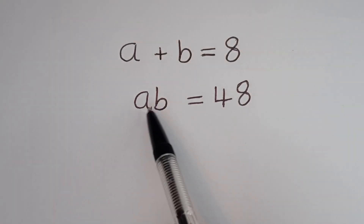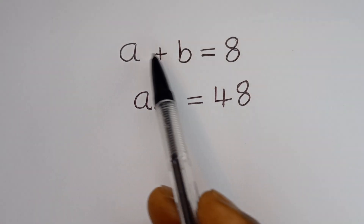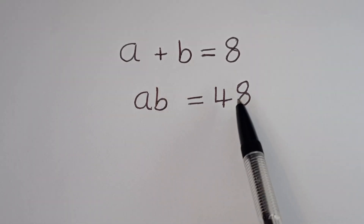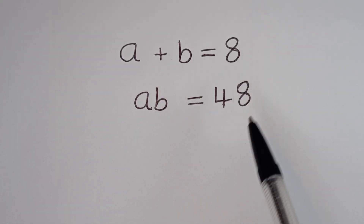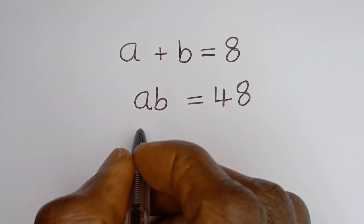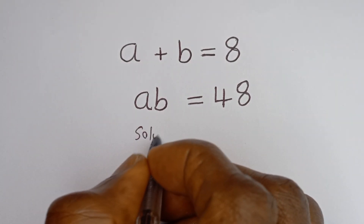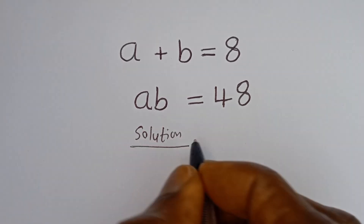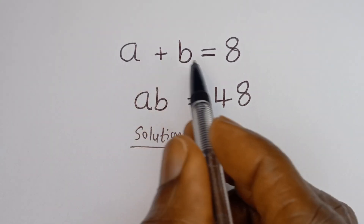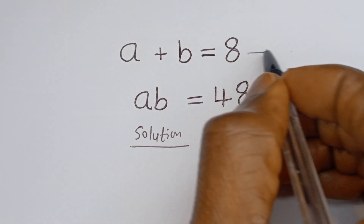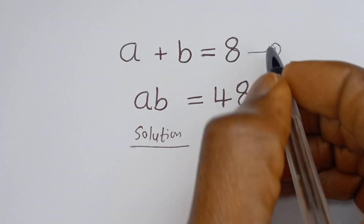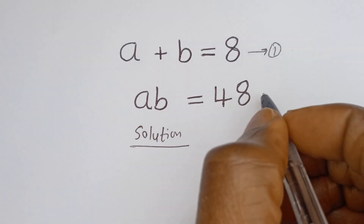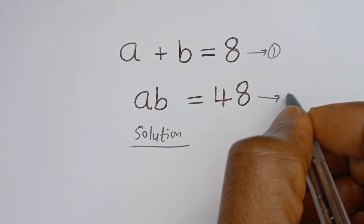Hello. How to solve for A and B in this equation: A plus B is equal to 8 — let's call this equation 1 — and AB is equal to 48 — let's call this equation 2. Solution.